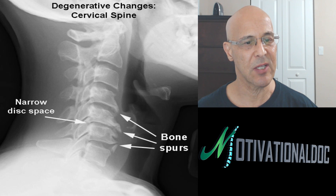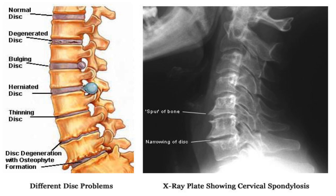Looking at the different disc problems — on the lower cervical spine, we see lower cervical spondylosis. Where it says 'spur of bone,' that is showing degeneration because the area is unstable. Wolf's Law states the body will take an unstable area and add calcium to help stabilize it. Unfortunately, when it adds calcium in the wrong area and starts affecting the nerve root, that leads to pain and discomfort.